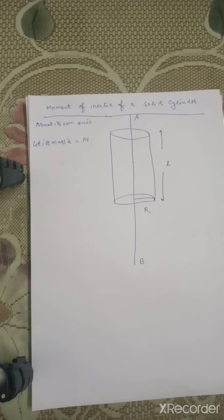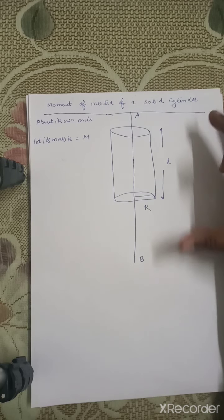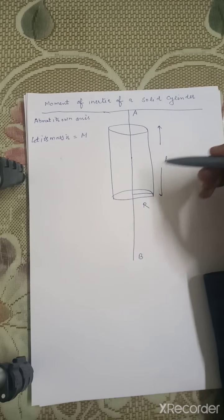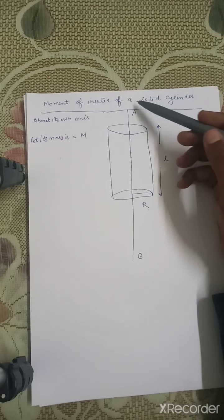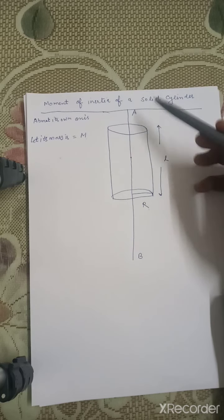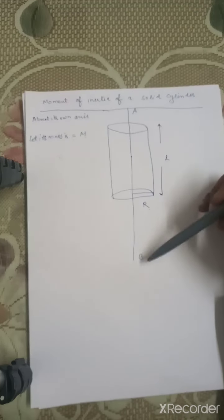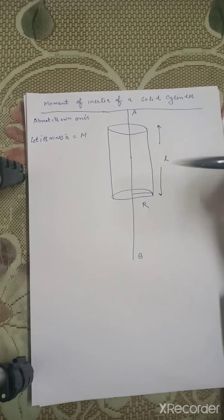So if we want to find the moment of inertia, first we have to specify the axis about which we have to calculate it. Suppose we have considered this slender — let its length be L, its radius be R, and let its mass be M. AB is the axis passing through its center of mass and along its length; it is called its own axis. The slender is revolving about axis AB and we want to find the moment of inertia about this axis.